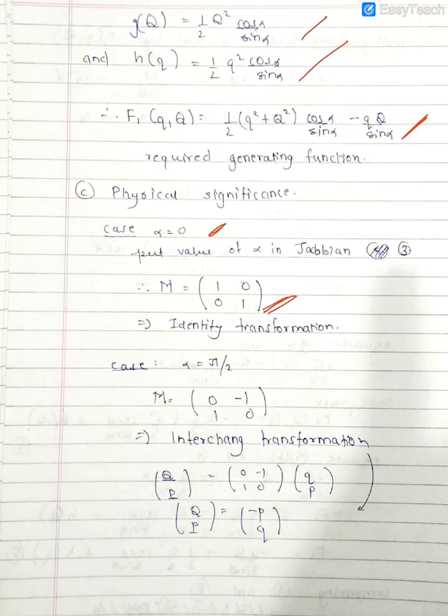When we put alpha as pi by 2, then M is kind of 0 minus 1, 1 then 0. This is an interesting transformation where my small q goes to become capital P and my small p becomes minus capital Q, or vice versa. In other words, you can say that the coordinates and momenta interchange. This is what we term as interchange transformation.